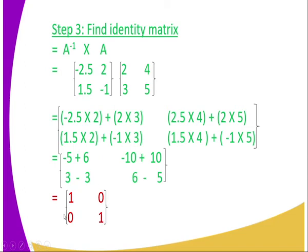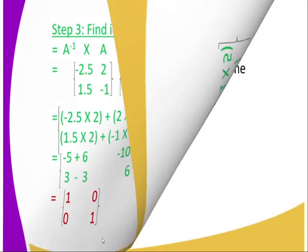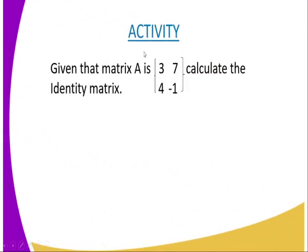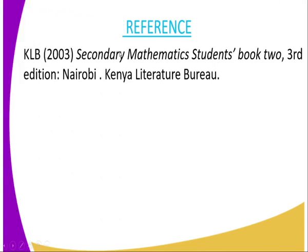Therefore the identity matrix is [[1, 0], [0, 1]]. That brings us to the end of today's lesson. For your assignment: given that matrix A = [[3, 7], [4, −1]], calculate the identity matrix of A. For reference, consult the secondary mathematics student book, Form Four, published by the Kenya Literature Bureau.